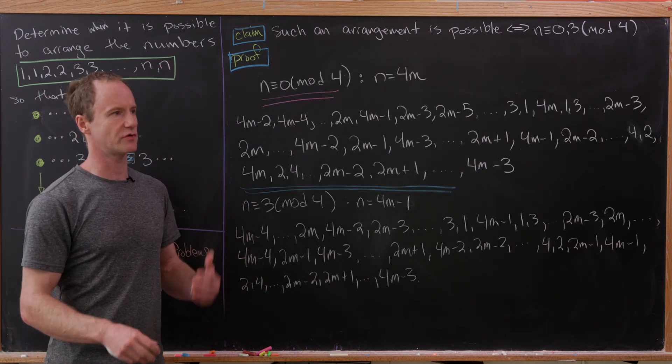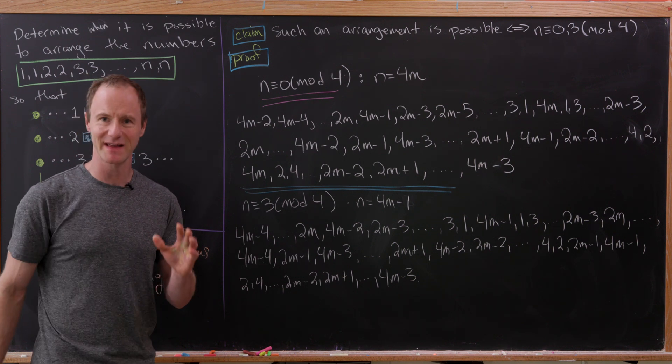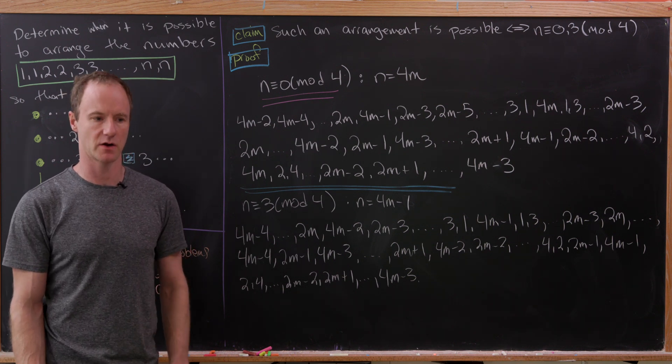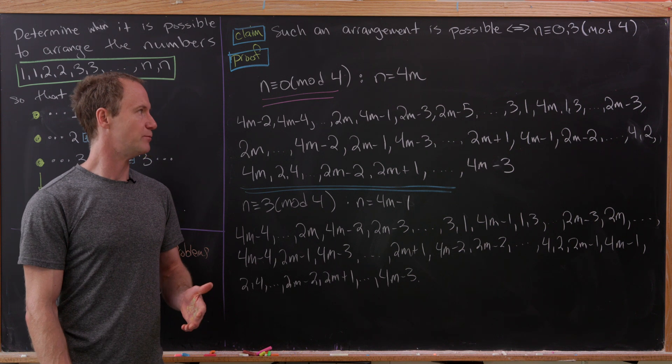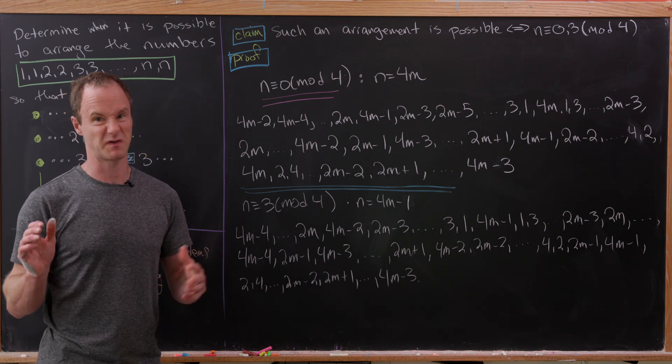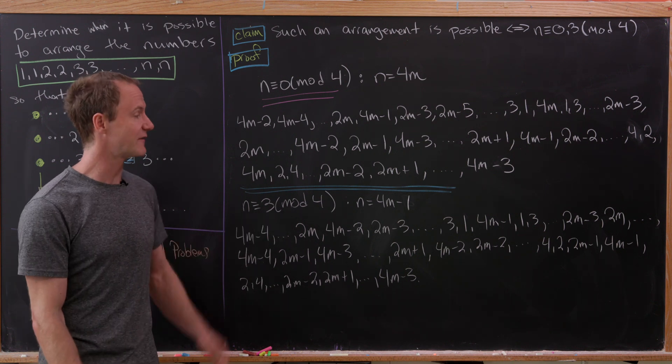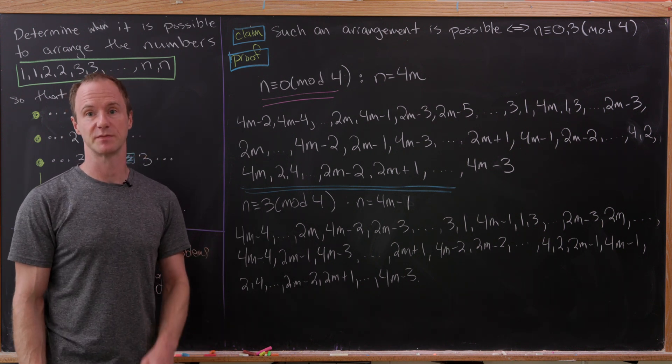We just showed that such an arrangement was impossible if N was congruent to 1 or 2 mod 4, and I think that's a very satisfying argument. What's not so satisfying is building the arrangement in the other cases. I'm not really going to go through that. I don't think that's super interesting. I'll just leave them on the board right here if you guys are interested to look at it. And that's a good place to stop.